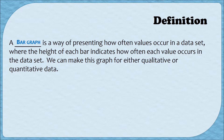What's nice about a bar graph is that you can make it for either qualitative or quantitative data. What's not so nice about a bar graph is that in order to make it you have to have some sort of frequency table first — this could be a frequency distribution, a relative frequency distribution, or something similar. So let's jump right into an example of creating a bar graph.